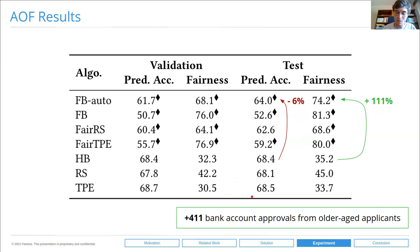From a more practical standpoint, the model selected by FB Auto, when compared to the fairness-blind counterpart, which is Hyperband, these models actually accept 411 more bank accounts from legitimate older-aged individuals. These are 411 legitimate older-aged individuals that would not have access to a bank account as we optimize only for performance.